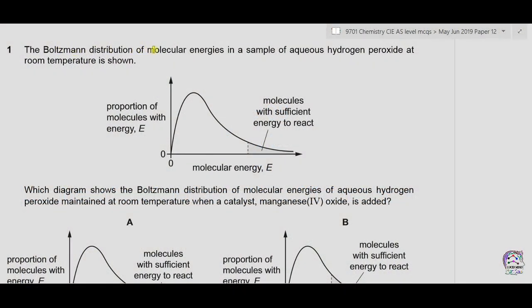The Boltzmann distribution of molecular energies in a sample of aqueous hydrogen peroxide at room temperature is shown. Which diagram shows the Boltzmann distribution when a catalyst, manganese(IV) oxide, is added? The x-axis shows molecular energy E, the y-axis shows the proportion of molecules with energy E, and the shaded region represents molecules with sufficient energy to react — that is, those with sufficient activation energy to convert into products.